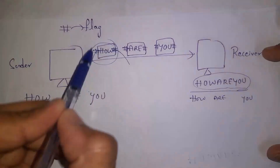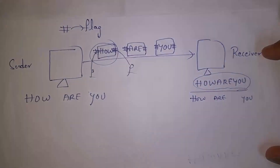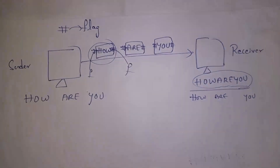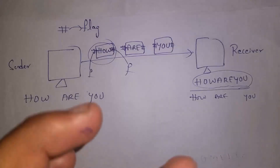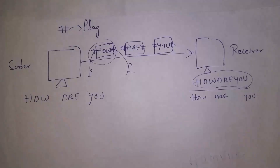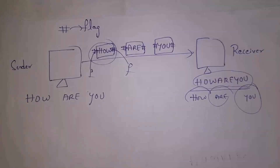Data will be forwarded with one flag at the start and another flag at the end. We need to include flags for each and every frame. As we include flags for each frame, the receiver can now read the data correctly. Whenever the receiver receives each frame, it decodes that frame — decoding means removing the flags — and then reads the actual data: first 'how', then 'are', then 'you'.